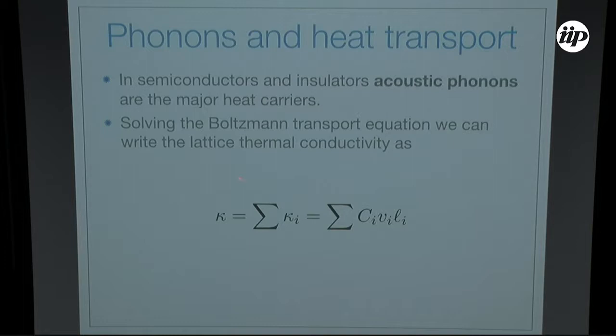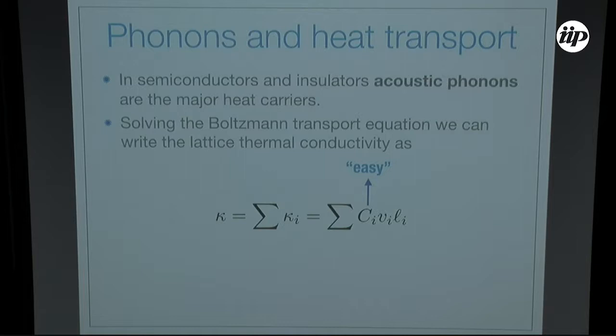One way to calculate phonon thermal conductivity is solving the Boltzmann transport equation. With simple approximations, the thermal conductivity is the sum over phonon modes of specific heat capacity, group velocity, and mean free path. The specific heat is easy — it's Bose-Einstein statistics. Group velocities are easy — it's just the derivative of the phonon dispersion curves. But the mean free path is quite difficult to calculate, so instead we use molecular dynamics.